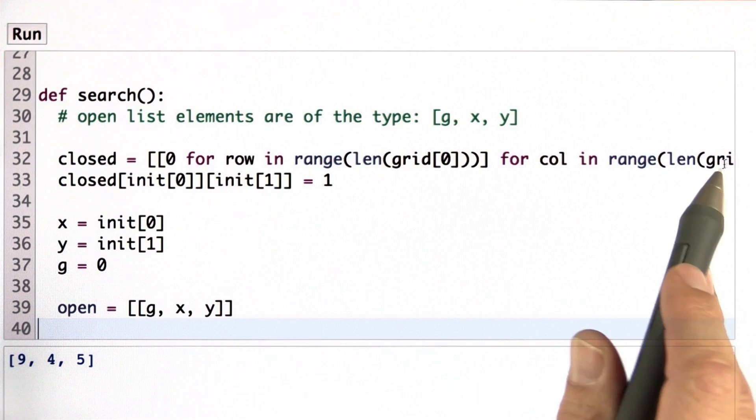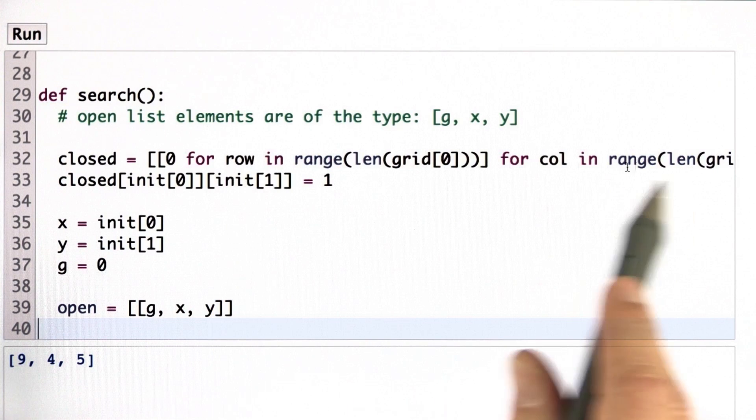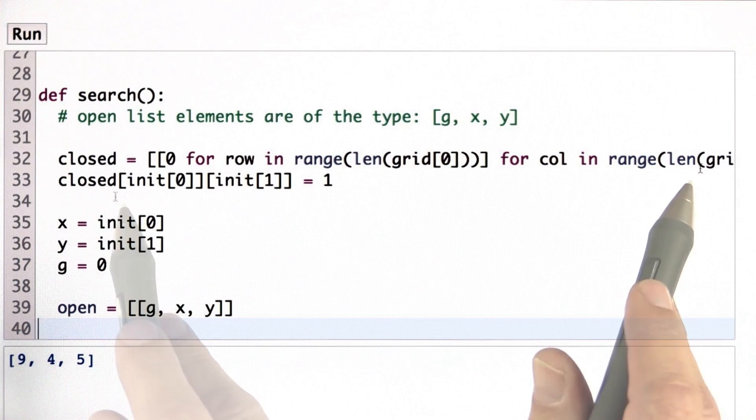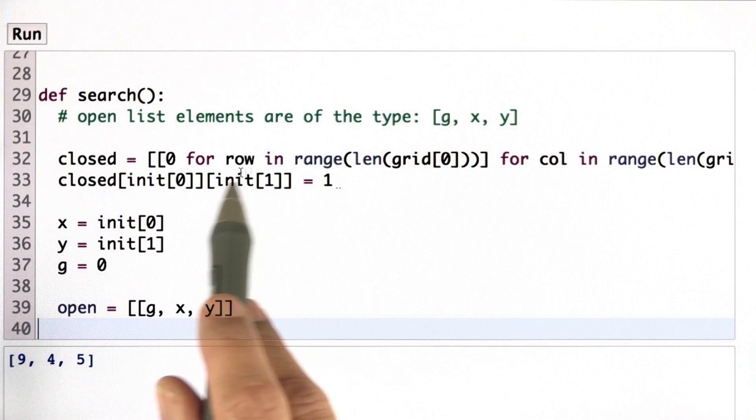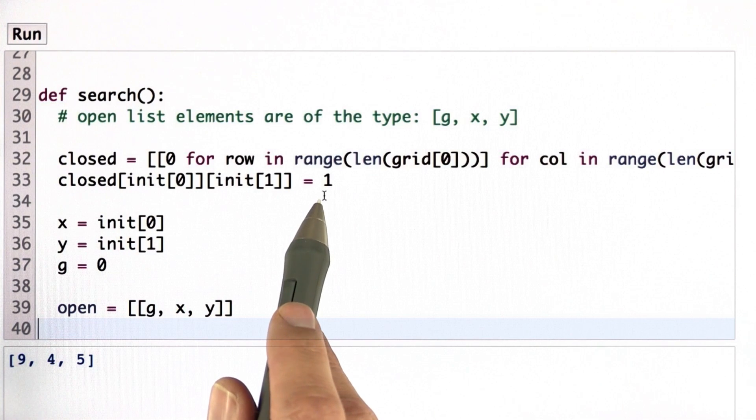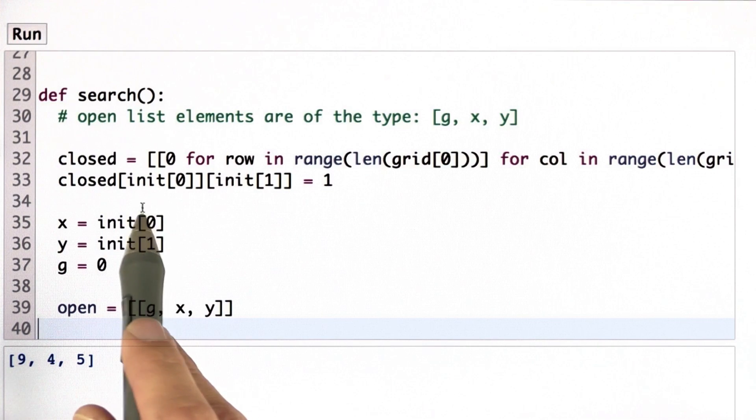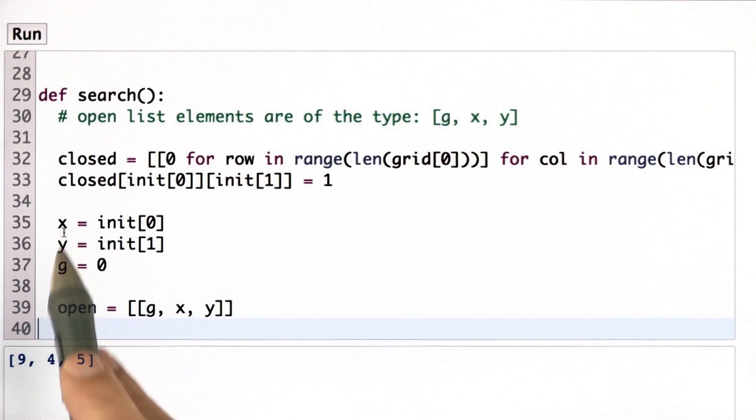This over here assigns an array of the same size as the field grid. I initialize the starting location as checked. And I assign the coordinates to x, y and a g value of 0. And my initial open list is going to be this one element of my initial coordinates and a g value of 0.